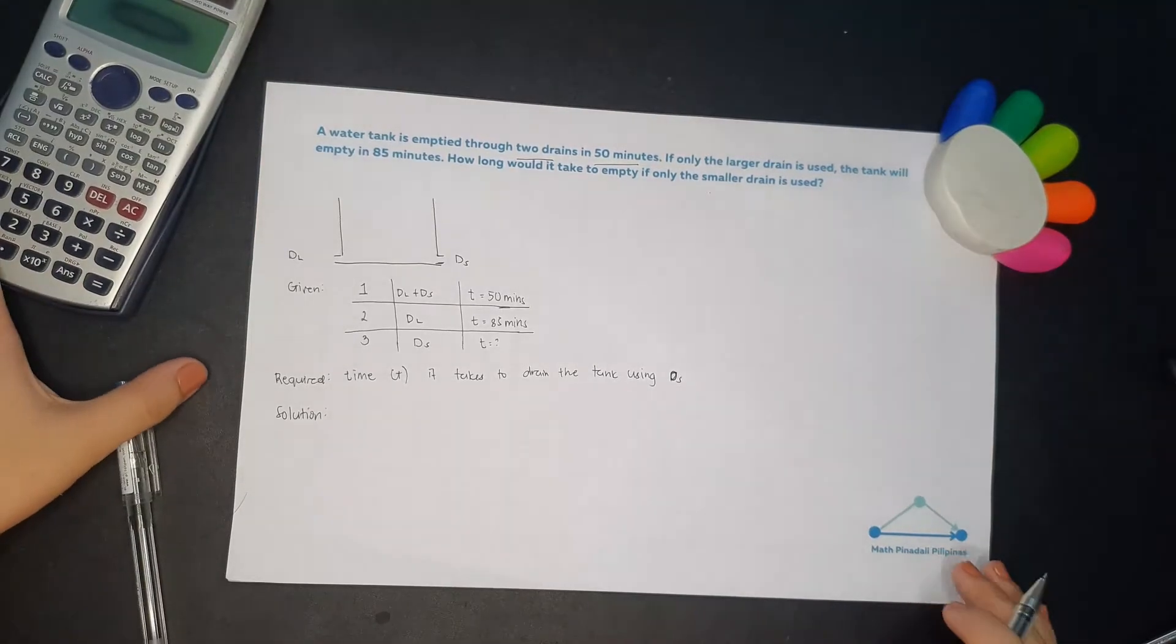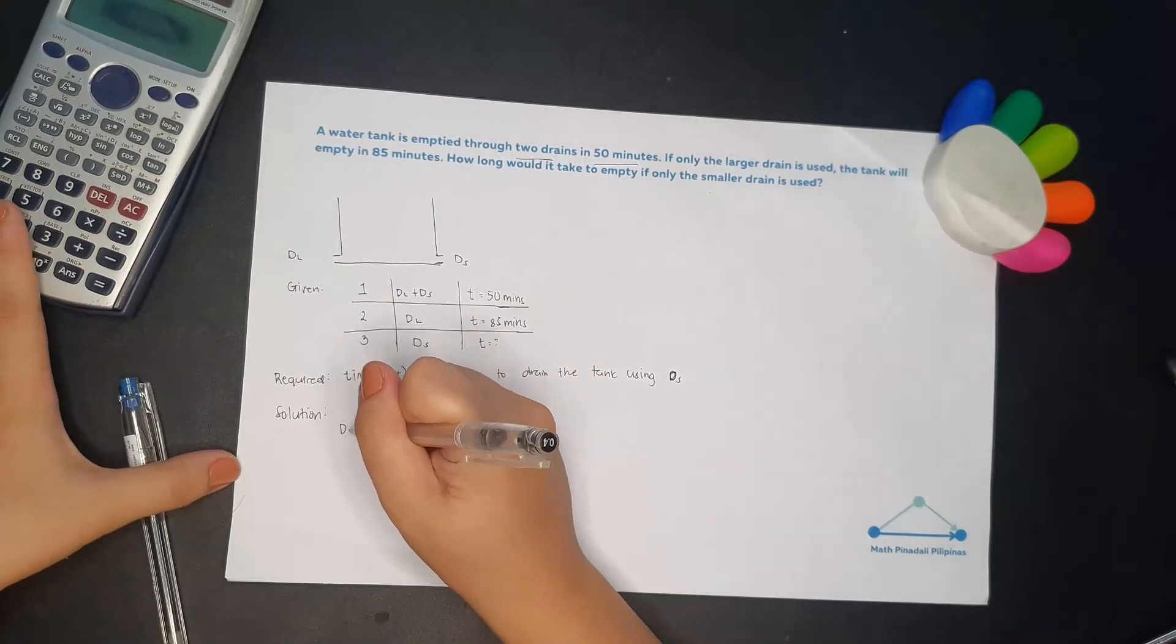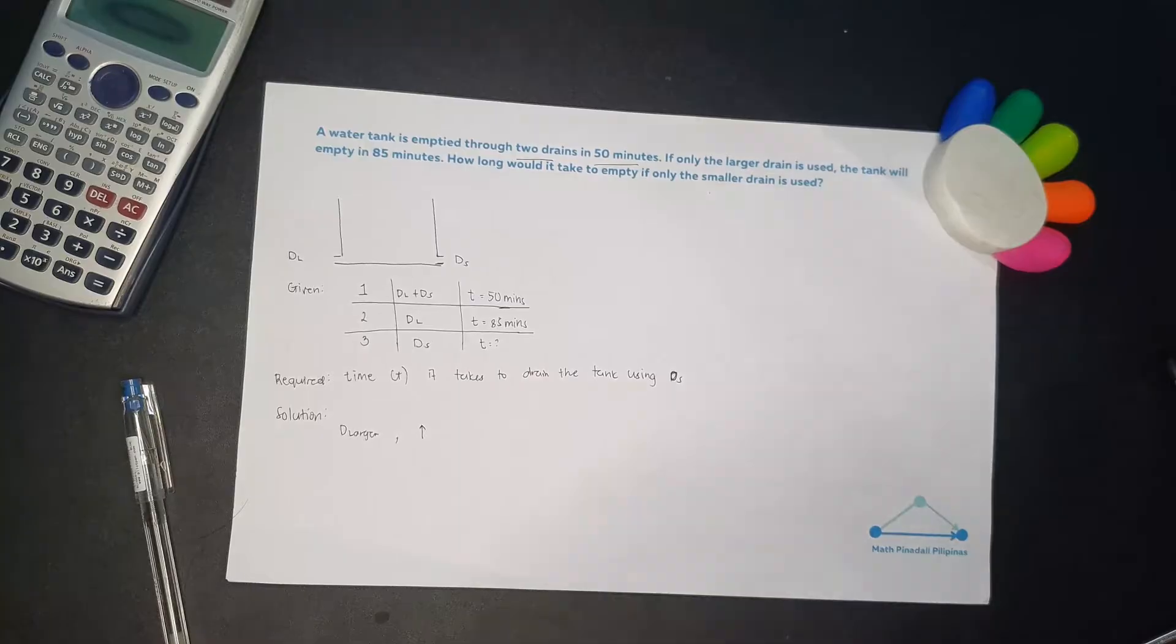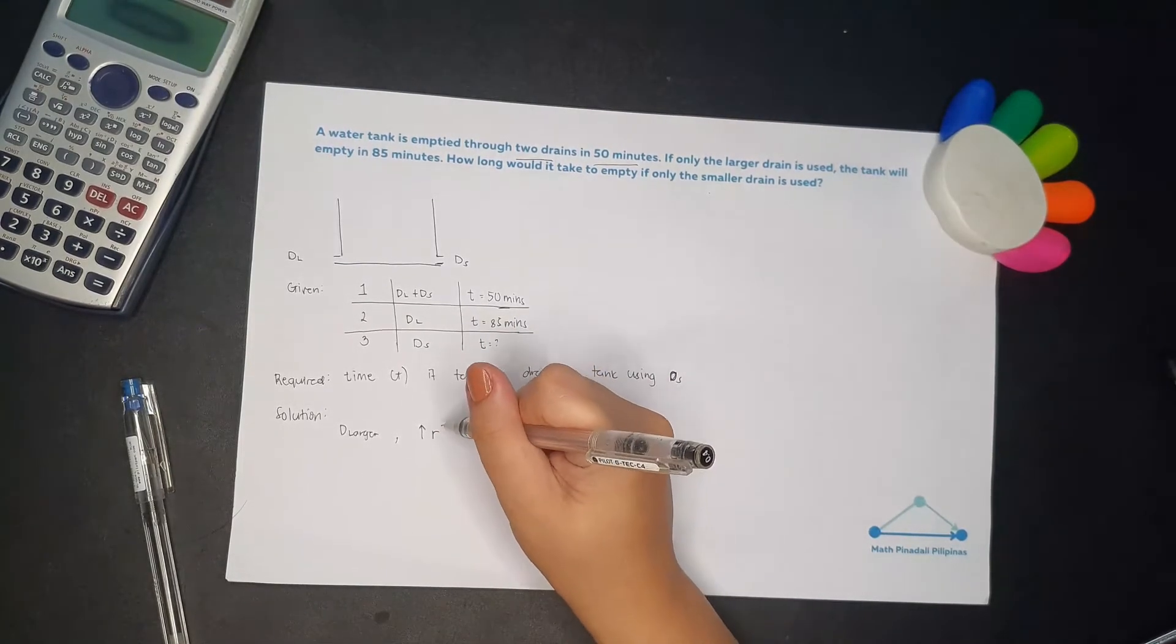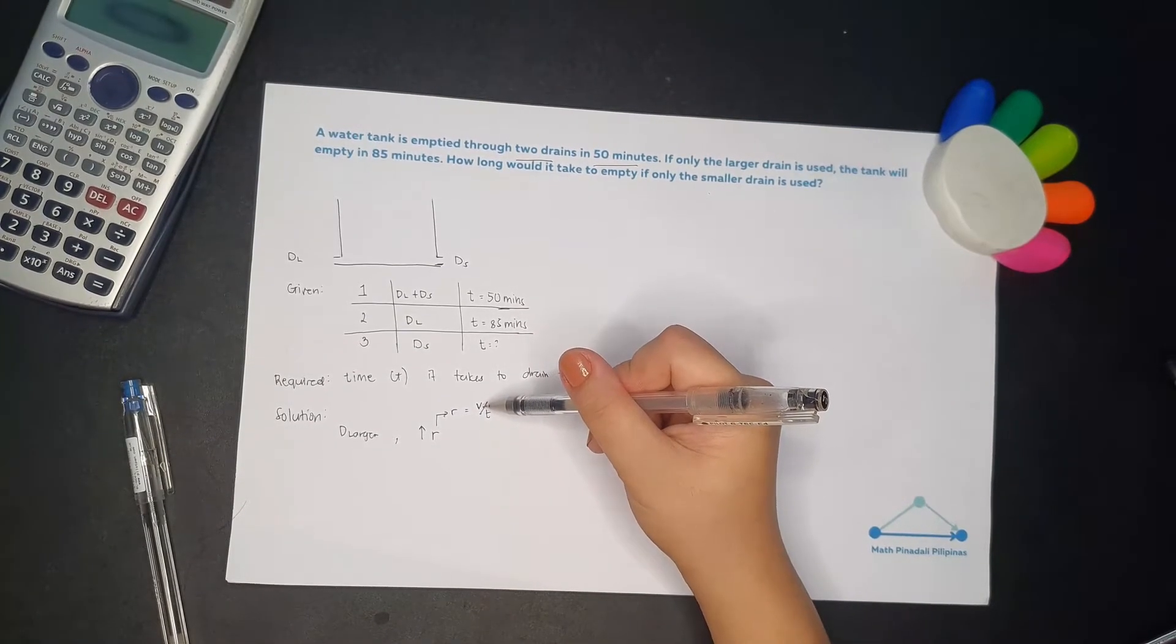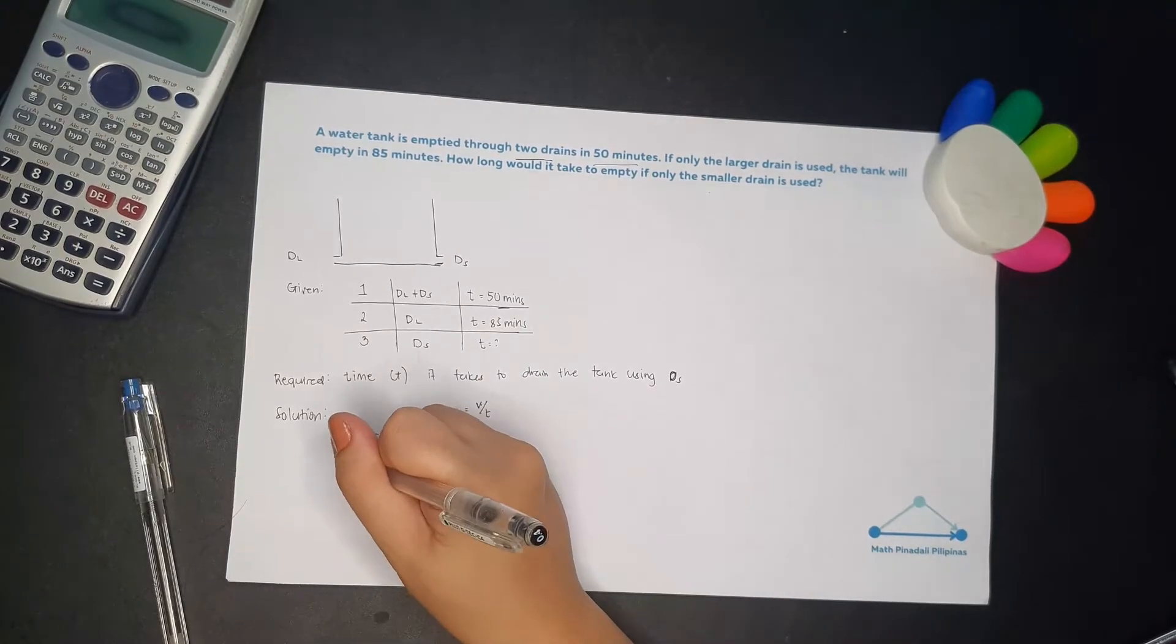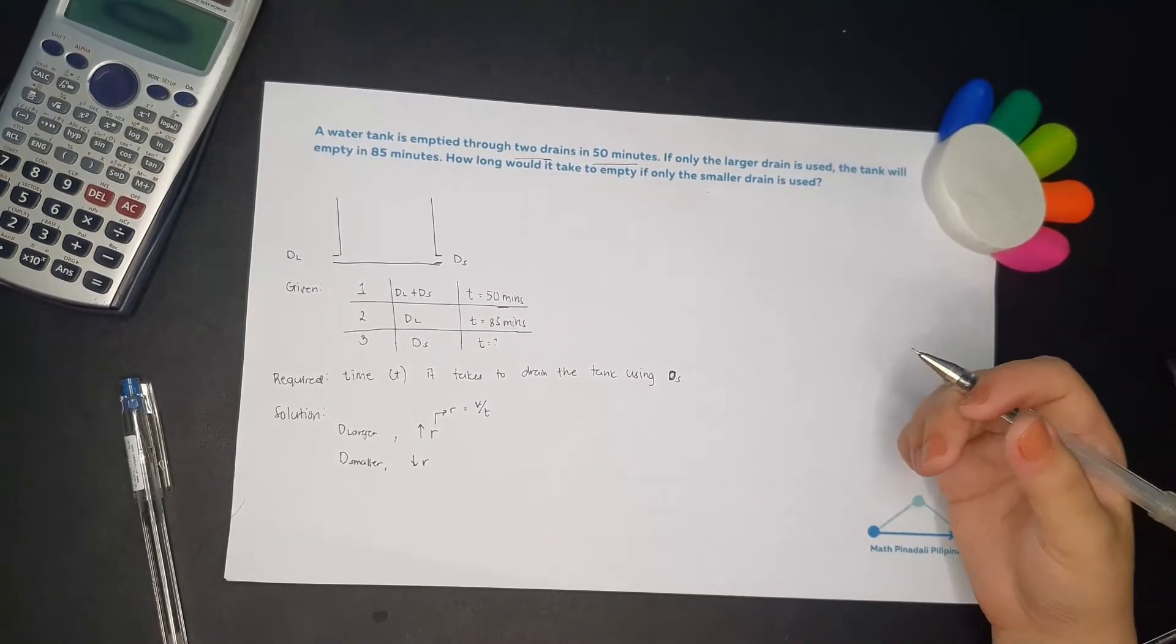For the solution, meron pa yung dalawang drain. So nasusukat yung drain in terms of its area. So pag mas malaki yung drain, larger drain, mas mabilis. Yung mas mabilis madidrain yung tubig kasi malaki yung daanan ng tubig. So ang rate mo, so rate, so ito yung volume over time. So mas malaki, mas maraming volume yung pumapasok dun sa area. So mas mabilis. So for the smaller drain naman, smaller, mas mababa yung rate, mabagal kasi maliit lang yung daanan ng tubig.